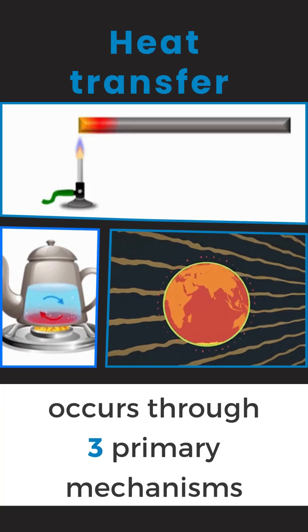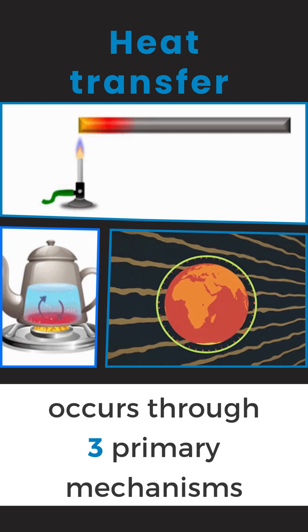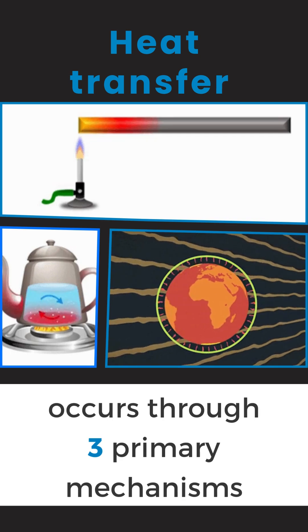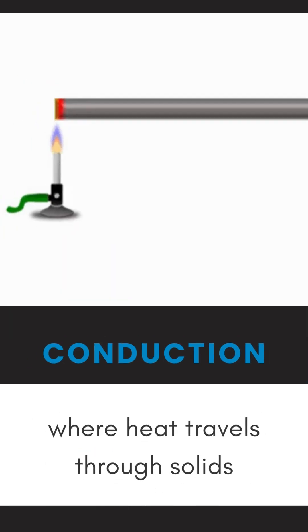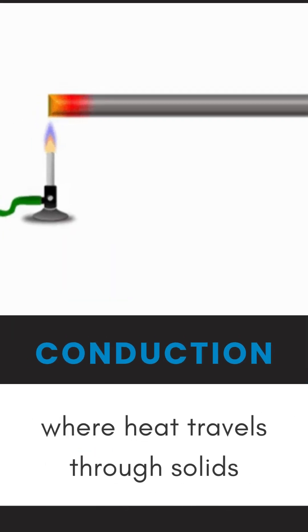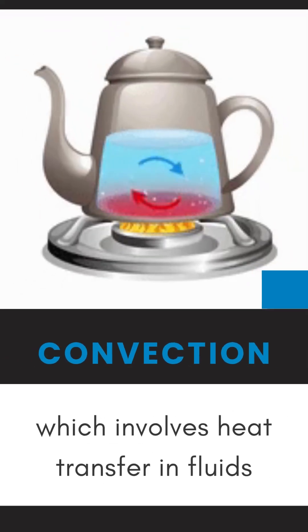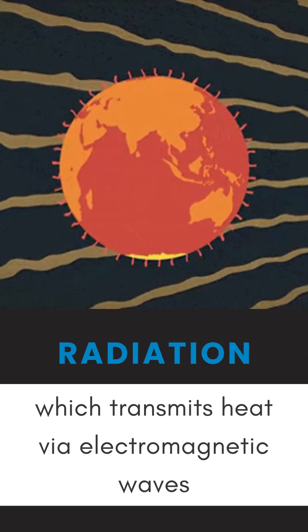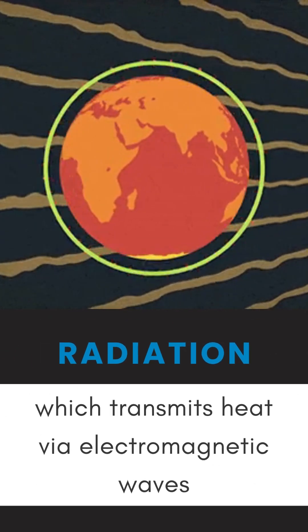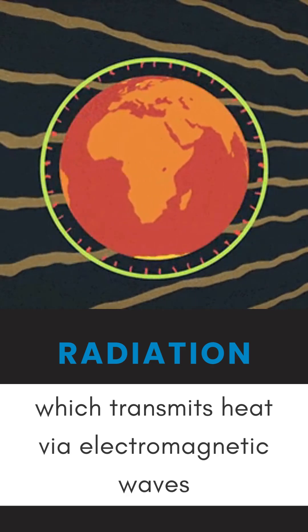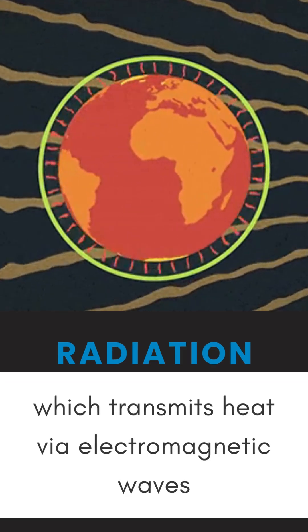Heat transfer occurs through three primary mechanisms: conduction, where heat travels through solids; convection, which involves heat transfer in fluids; and radiation, which transmits heat via electromagnetic waves.